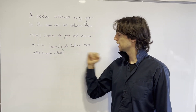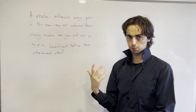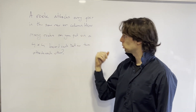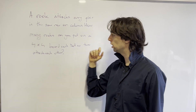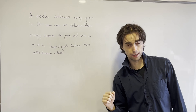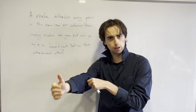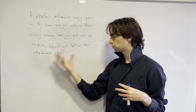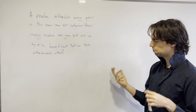I think this problem really helps illustrate some of the principles behind proof writing. A rook attacks every piece in the same row or column. How many rooks can we put on a four-by-four board such that no two attack one another? I'd like you to follow along — maybe pause for five minutes to try to solve it.